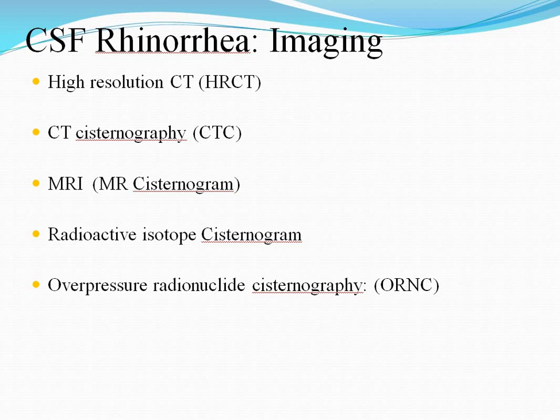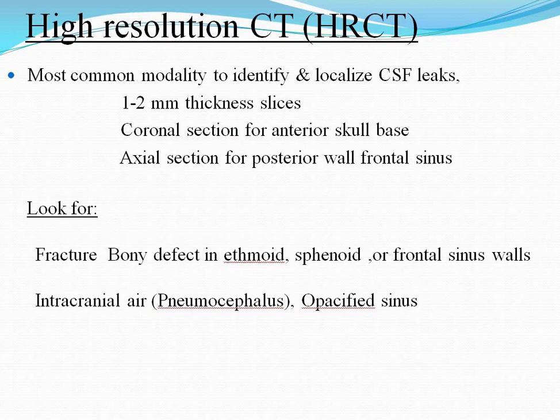CSF rhinorrhea imaging: high-resolution CT, CT cisternography, MRI cisternogram, radioactive isotope cisternogram, and over-pressure radionuclide cisternography. High-resolution CT is the most common modality to identify and localize CSF leaks, using 1–2 mm thickness slices: coronal sections for the anterior skull base and axial sections for the posterior wall of the frontal sinus. Look for fractured bony defects in the ethmoid, sphenoid, and frontal sinus wall, intracranial air, pneumocephalus, and opacified sinuses.